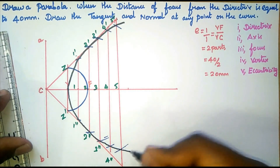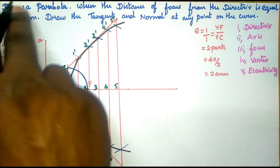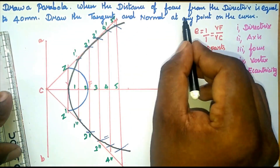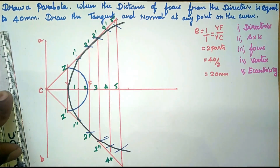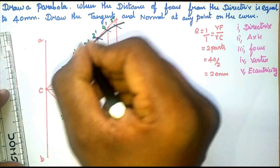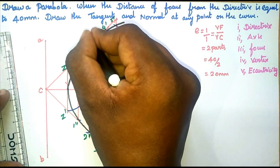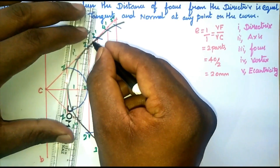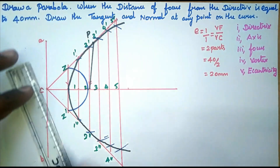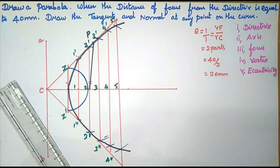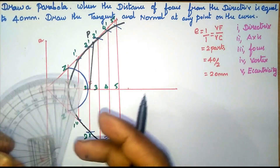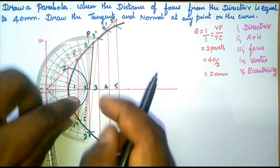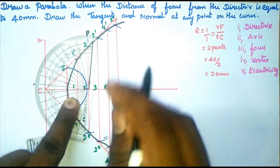Now we have the parabola curve drawn — a parabola with the distance of focus from the directrix equal to 40 mm. Next, we draw the tangent and normal at a point on the curve. We place point P on the curve and join P to focus point F.